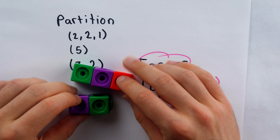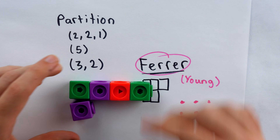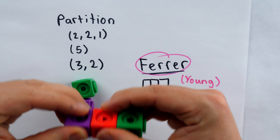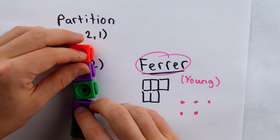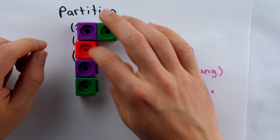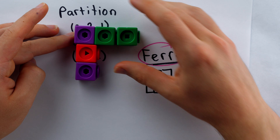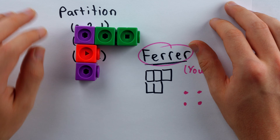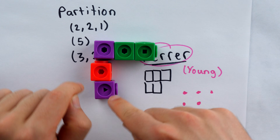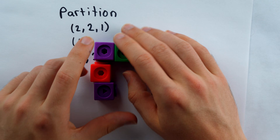Finishing our discussion with five, the only partitions we didn't look at were (4, 1) — that would be the Ferrer diagram for that partition — and then, of course, there's the partition that's just (1, 1, 1, 1, 1). That's a perfectly valid partition as well. There's also the partition (2, 1, 1, 1) and the partition (3, 1, 1). I think that's all of the partitions of five. With these partitions, each of the positive integers — in this case 3, 1, and 1 — is called a part of the partition.